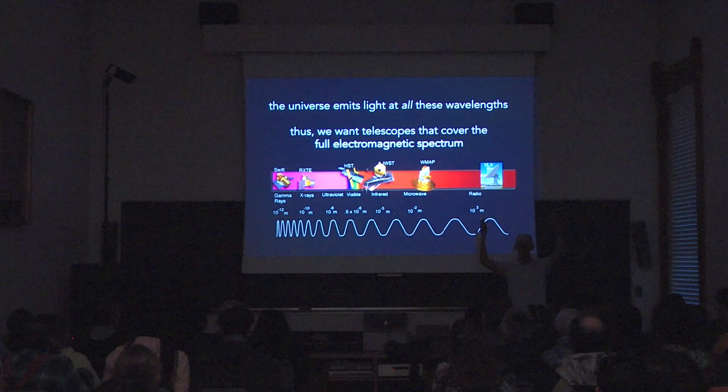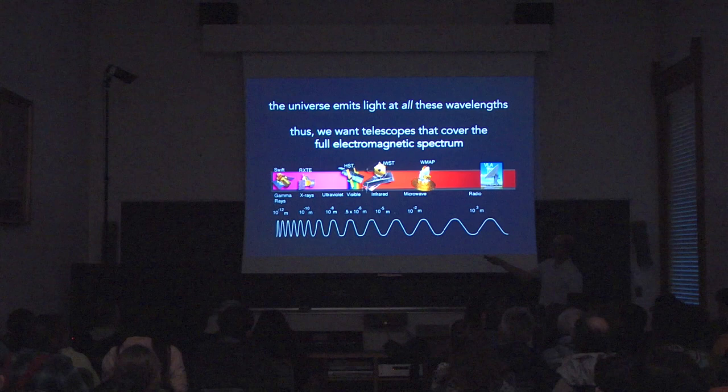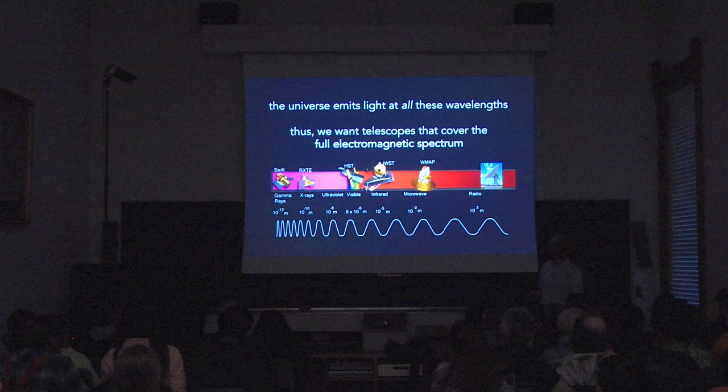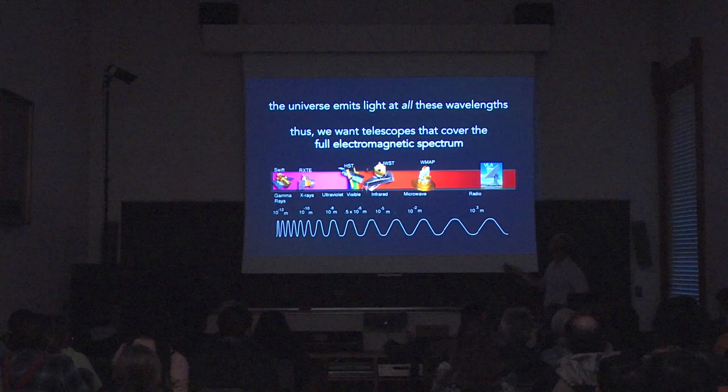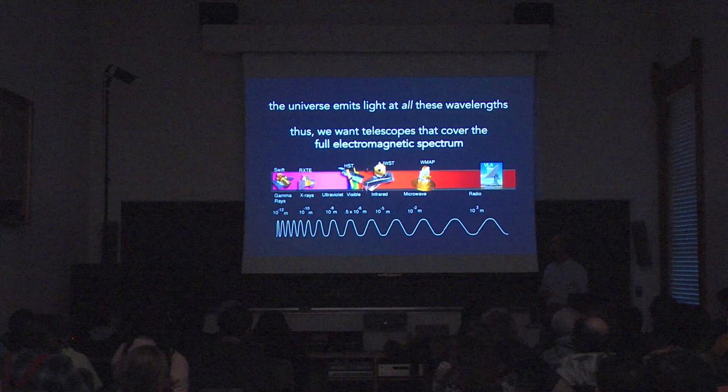The Hubble Space Telescope, launched in 1989, mostly operates in the visible with a little bit of infrared. Swift is a gamma ray space telescope still operating today. On the ground, radio waves penetrate the atmosphere easily so there are ground-based radio telescopes. Today I'll be talking mostly about the JWST or James Webb Space Telescope, which looks at wavelengths of light longer than the wavelengths we can see.